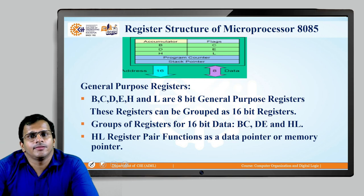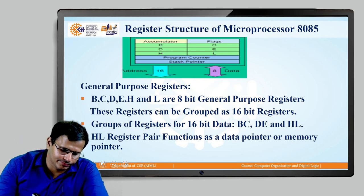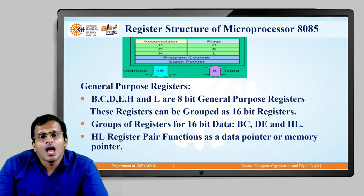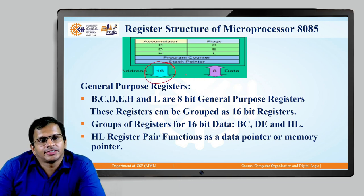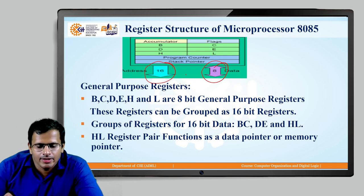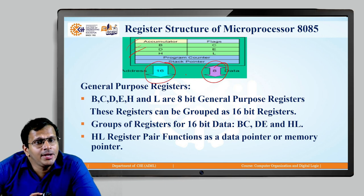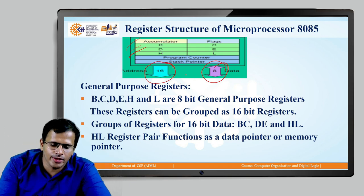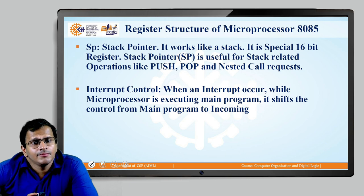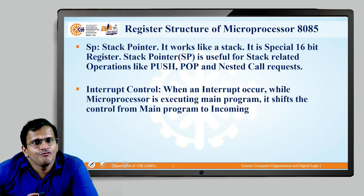The register structure of the microprocessor includes BCDEHL registers, the program counter, and the stack pointer. The address line is 16-bit and the data line is 8-bit. The stack pointer represents the address of the top of the stack. When looking at stack operations such as PUSH, POP, and XTHL, we will understand the stack pointer further.